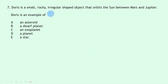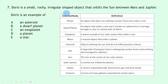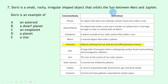Question 7 says Doris is a small, rocky, irregular-shaped object that orbits the sun between Mars and Jupiter. Doris is an example of which type of object? Asteroids are objects orbiting the sun that do not fulfil planetary criteria. Since Doris is small, rocky, irregular-shaped, and orbits the sun between two planets, it matches the definition of an asteroid. The answer is A.